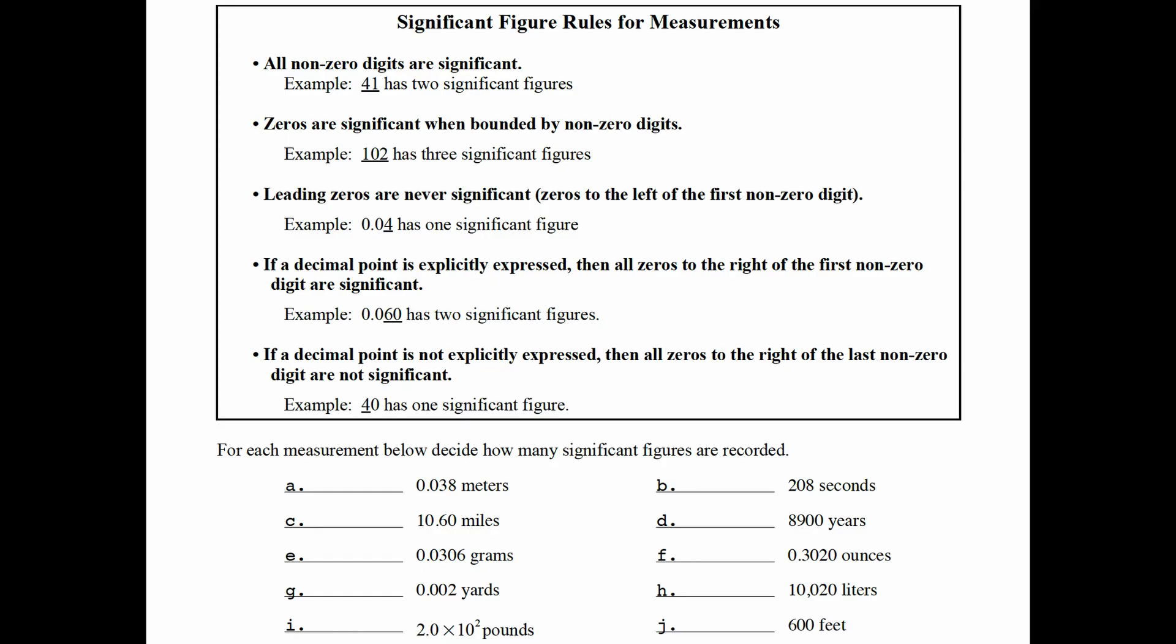In this section we'll review the significant figure rules for measurements. The first rule is that all nonzero digits are significant. And in the example 41, there are two significant figures because both of these digits are nonzero.